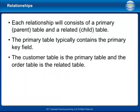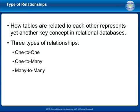Each relationship consists of a primary parent table and a related child table. The primary table typically contains the primary key field. For example, the customer table is the primary table and the order table is the related table. How tables are related to each other is a key concept in relational databases. There are three types of relationships: one-to-one, one-to-many, and many-to-many.